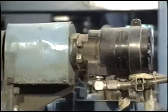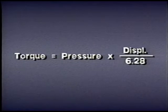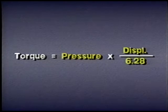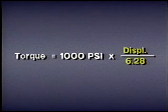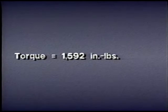Larger motors will generate more torque at the same pressure. To calculate the torque of a rotary actuator, we multiply the pressure in pounds per square inch times the displacement in cubic inches and divide by the constant 6.28. Remember, all examples assume 100% efficiency. For example, if pressure is 1,000 psi and displacement is 10 cubic inches, the torque is 1,000 times 10 divided by 6.28 — a little more than 1,592 inch-pounds.